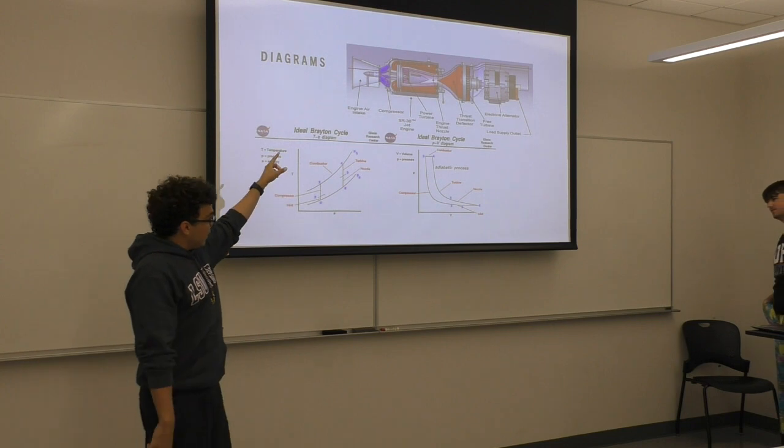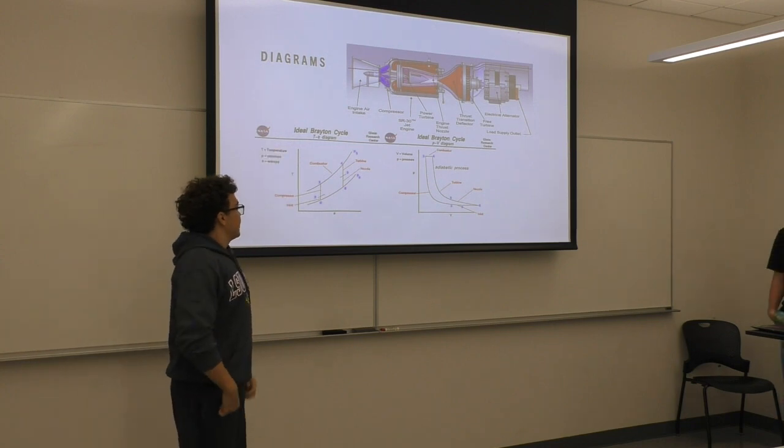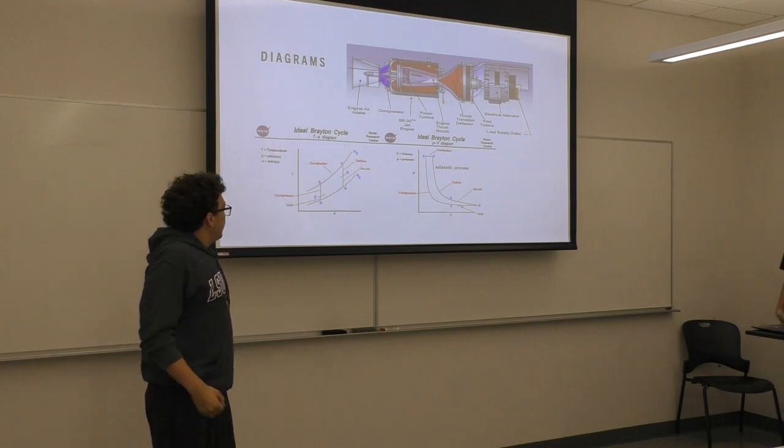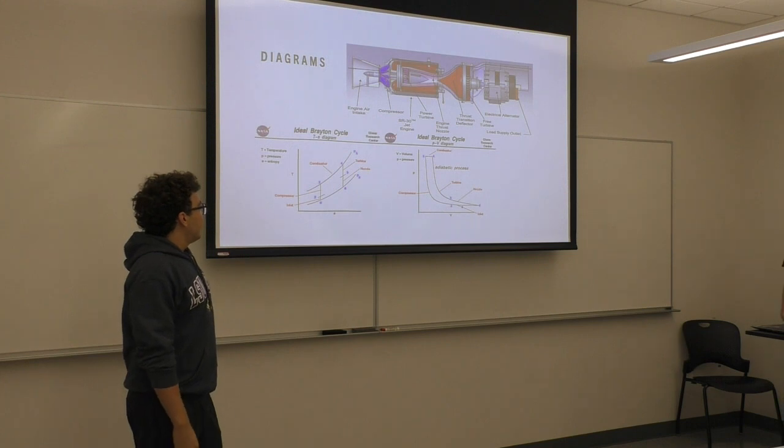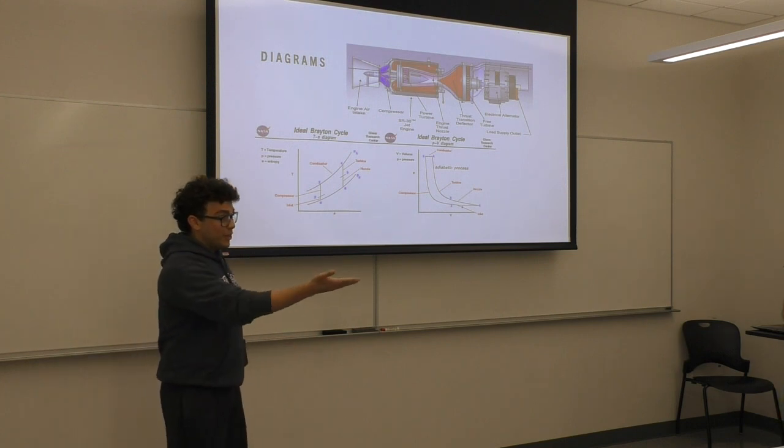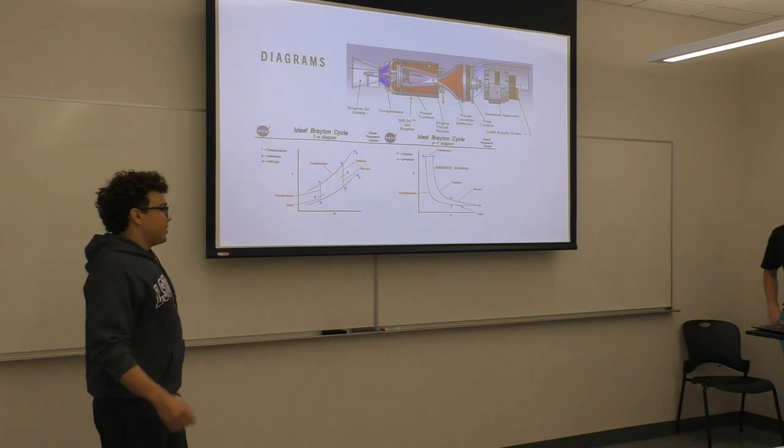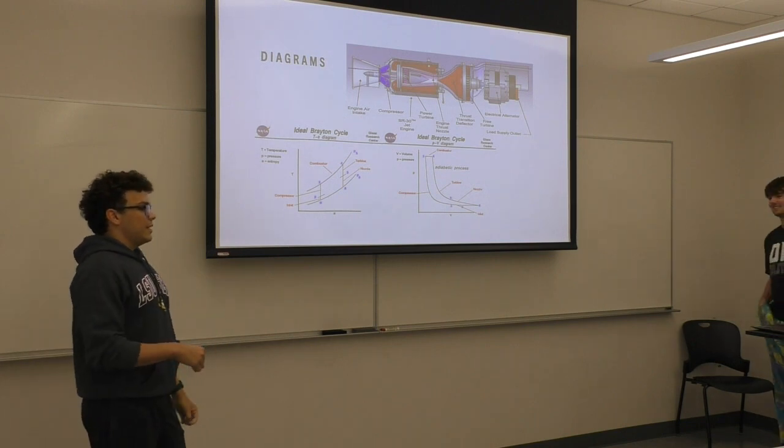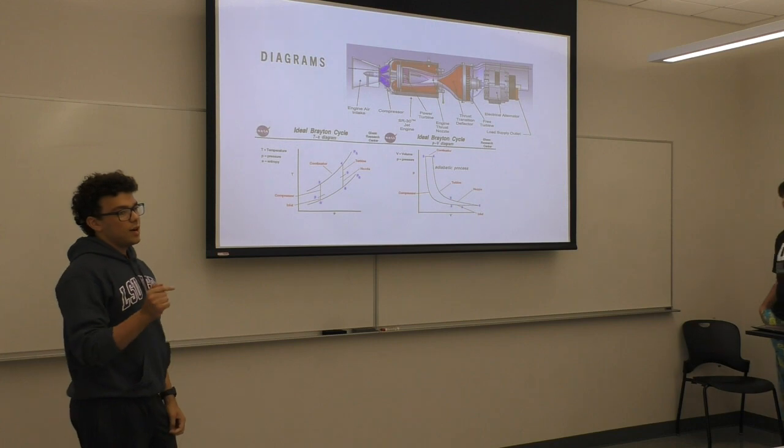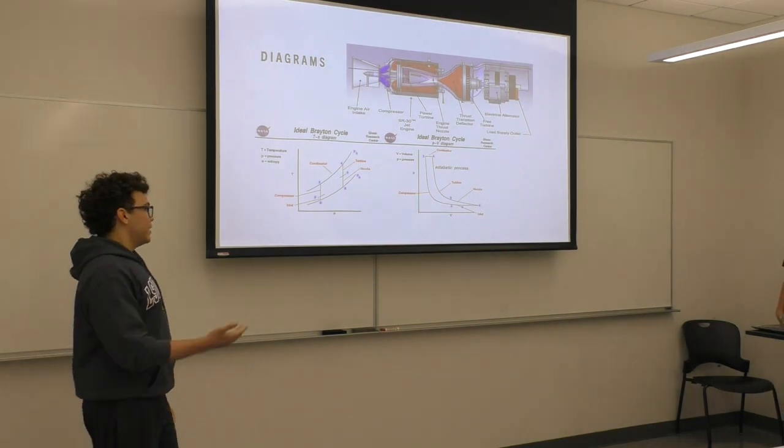All right, so obviously at the top, that's the main diagram of the system we're going to be using. And the main cycle, like the other Josh said, is the Brayton cycle. It's isentropic compression. Then it's heat addition. Then isentropic expansion. And then it's heat out.